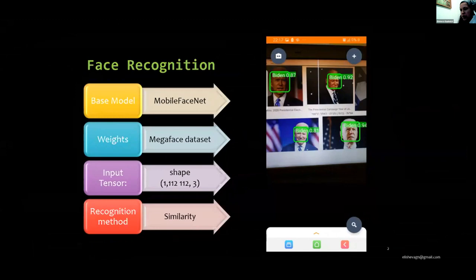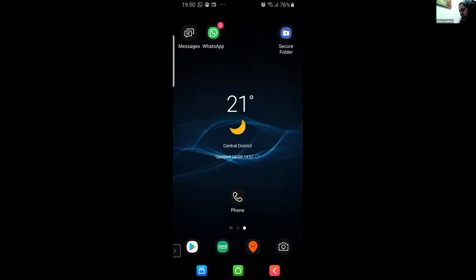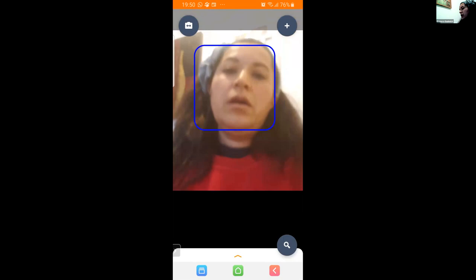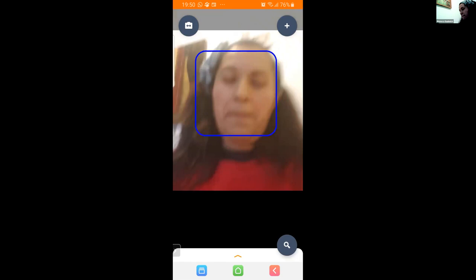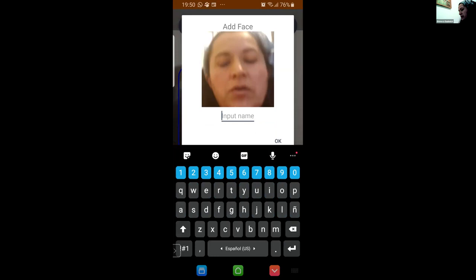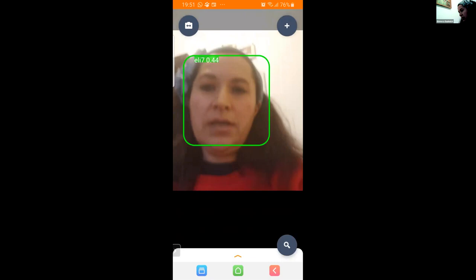Face recognition. The architecture model is a MobileFaceNet, pre-trained in MegaFace dataset. We use the similarity approach to identify a face. First, we register a new face and insert the face in a file or database to compare later. This is the app. Now it's detecting a human face. We must add the face. Now it's doing the prediction.